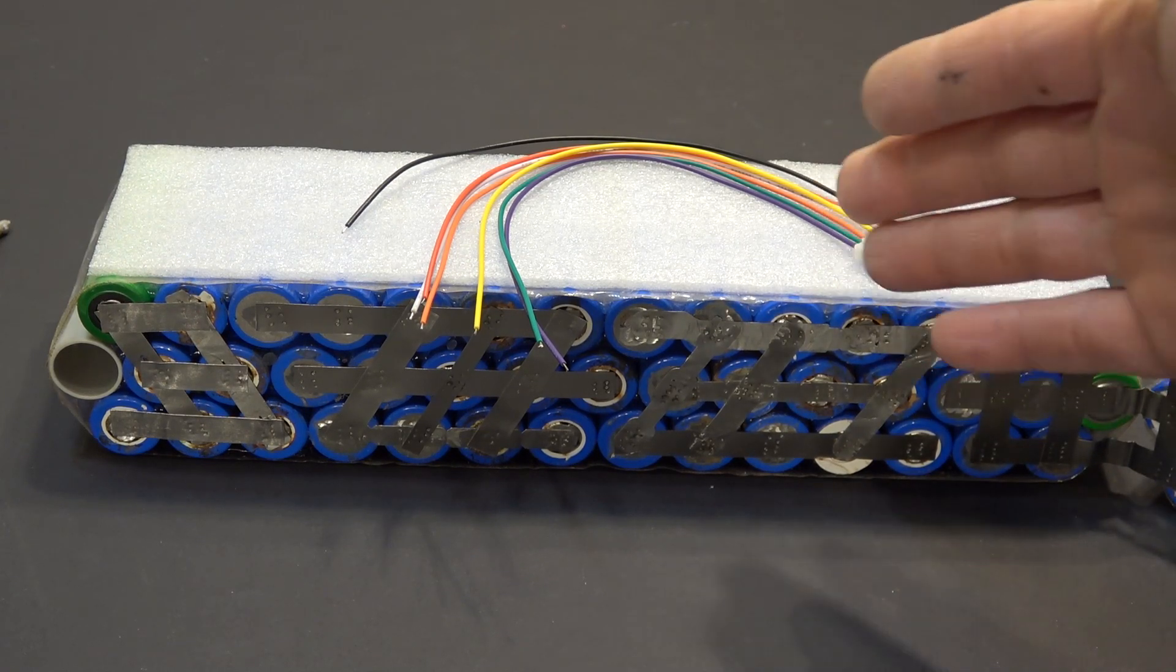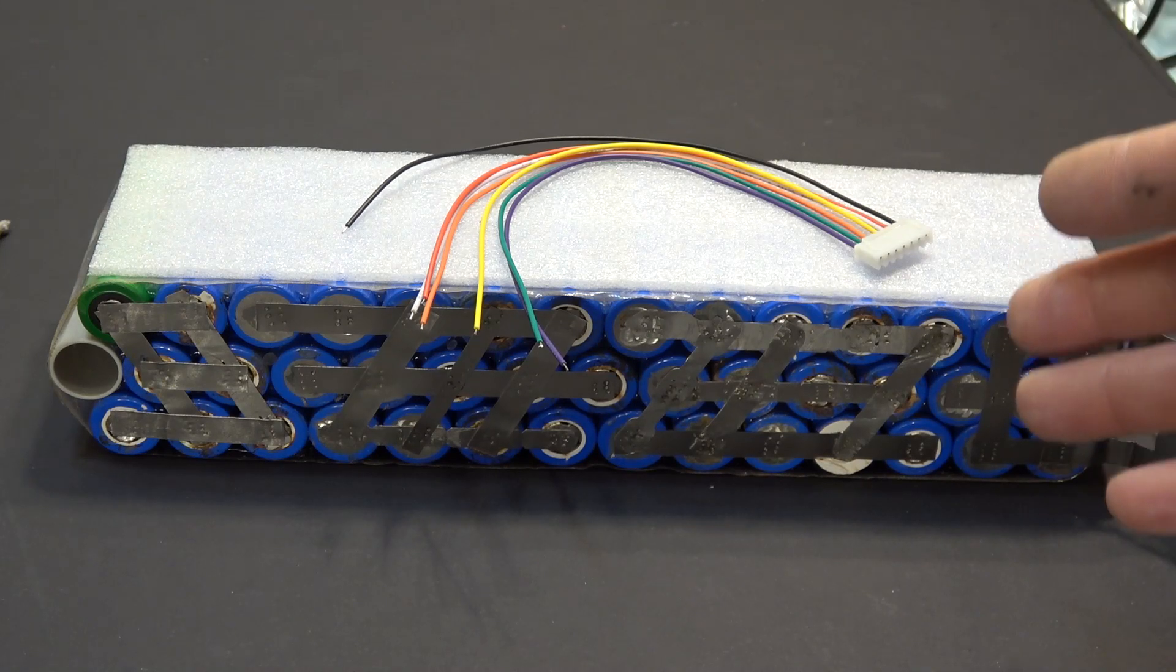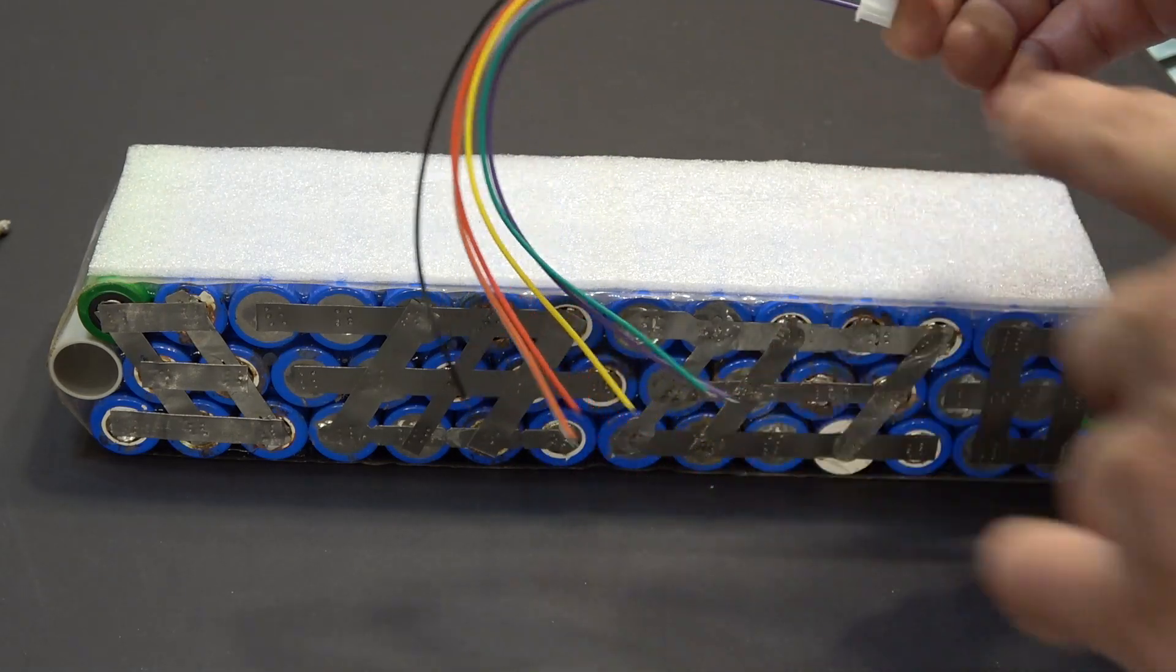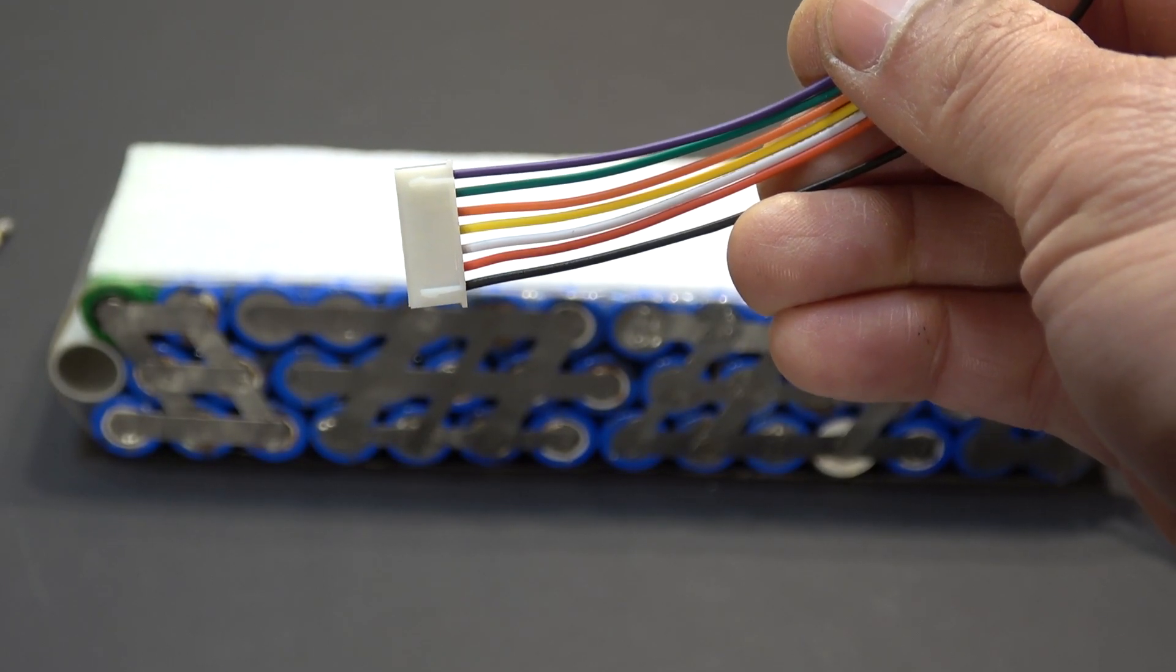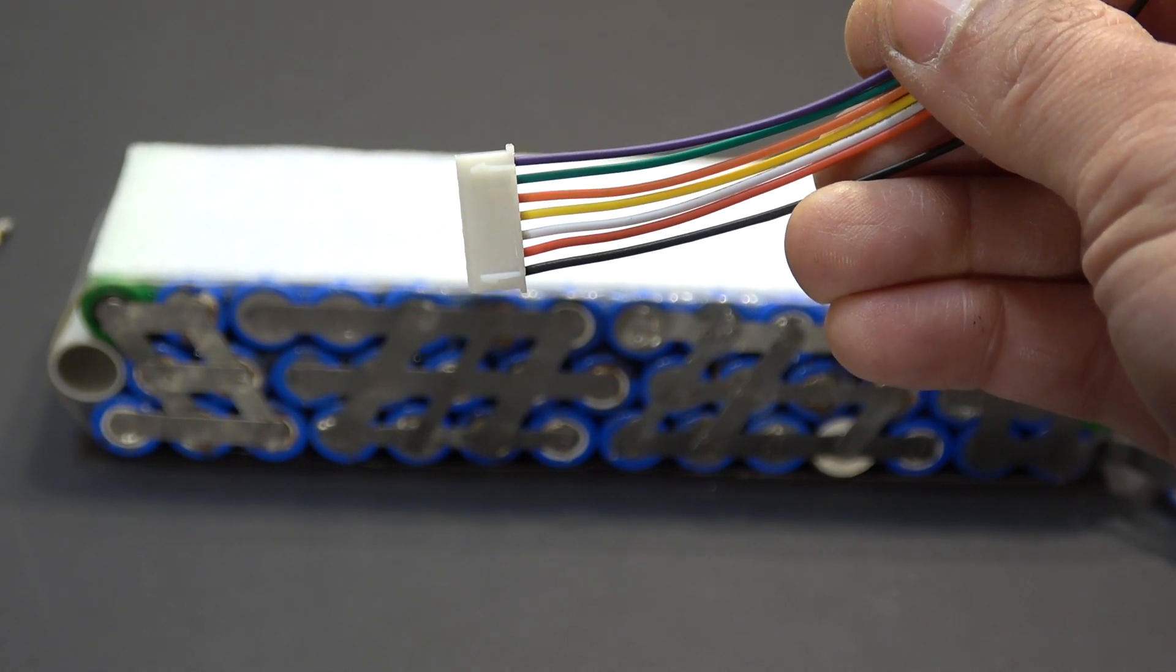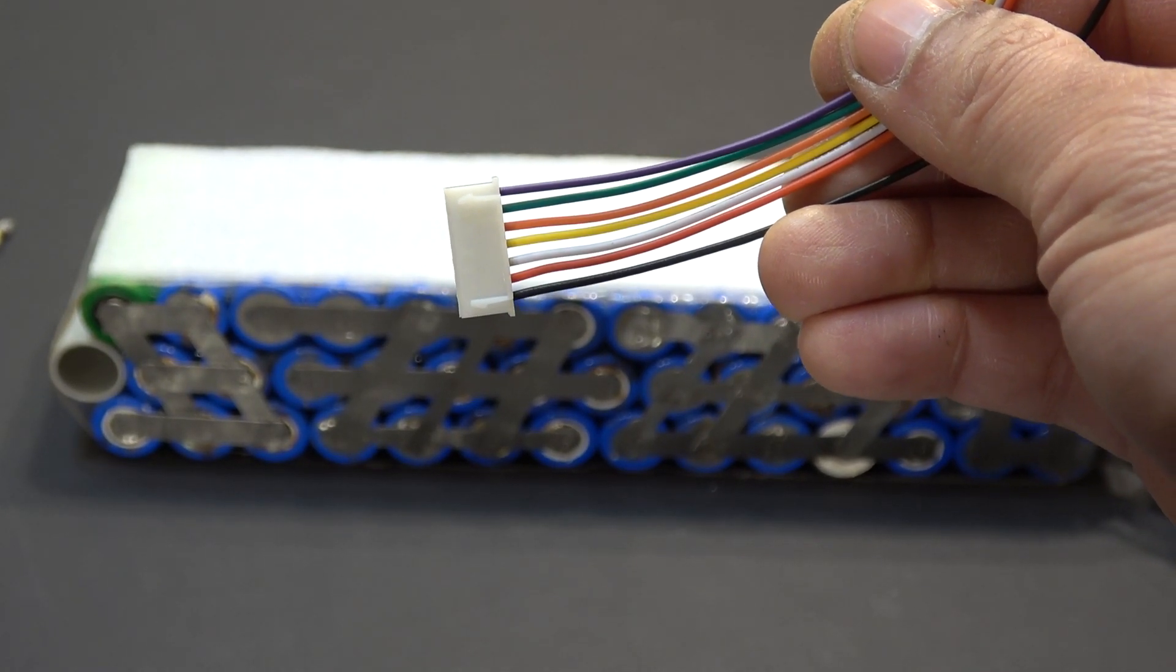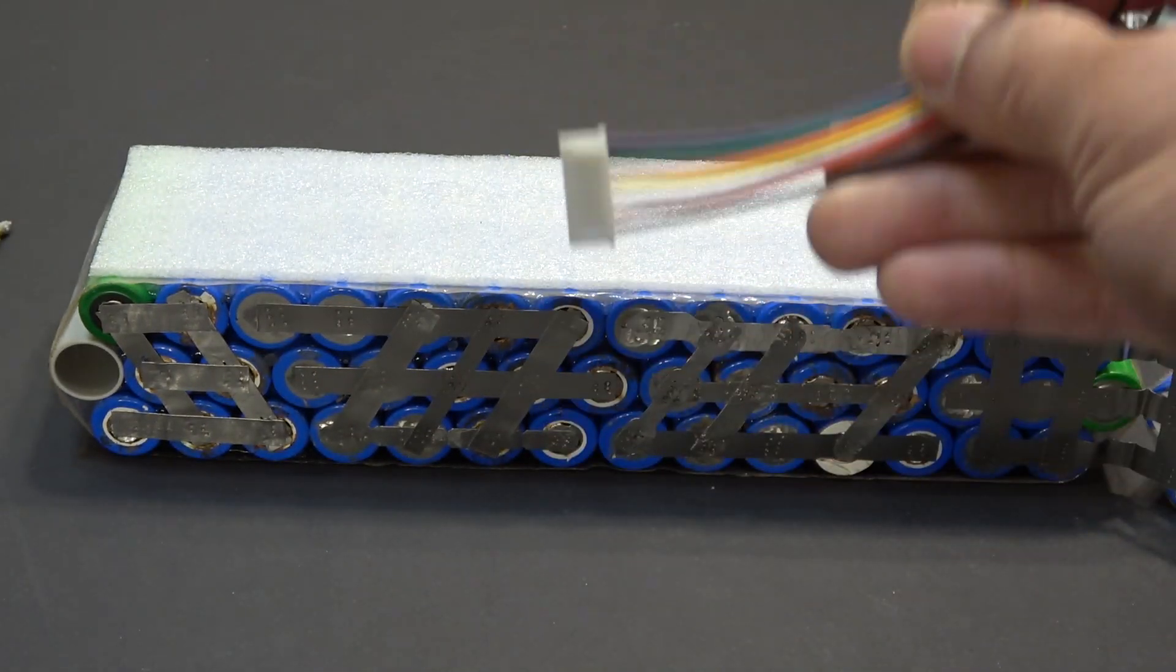So to balance charge this battery it doesn't matter how many cells you have in parallel. What matters is how many cells you have in series and that's what determines how many wires you have on your balance charging cable. So on this balance cable it's got seven wires and that is for a 6S battery pack. Your balance cable has one more wire than the series connection of your battery. So in this case it's a 6S battery pack so it has seven wires.